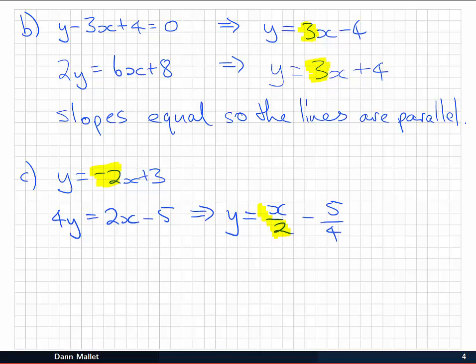Let's just check, minus 2 times 1 on 2, well that's going to multiply through to give us minus 1. So, product of the slopes is minus 1, so the lines here are perpendicular.